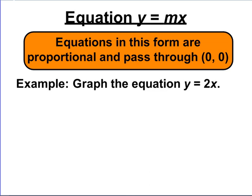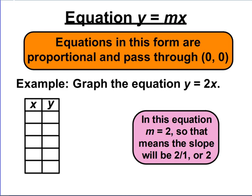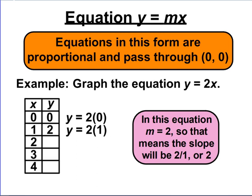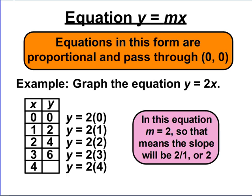Let's start graphing. To begin, we need to make an x-y table, putting in values for x and calculating what y is to get ordered pairs. I'm going to use 0 through 4 because they're easy numbers. When x is 0, y equals 2 times 0, which is 0. When x is 1, y equals 2 times 1, which is 2. When x is 2, y equals 2 times 2, which is 4. When x is 3, y equals 2 times 3, which is 6. And when x is 4, y equals 2 times 4, which is 8. So now I have my ordered pairs.